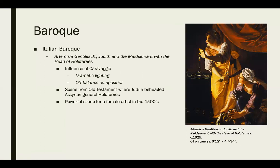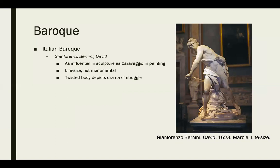We don't see many — if any — female names around this time, but Artemisia Gentileschi is one female artist who emerges. Her piece Judith and the Maidservant with the Head of Holofernes is influenced by Caravaggio, using very dramatic lighting and an off-balance composition. It depicts the Old Testament scene where Judith beheaded the Assyrian general Holofernes — a very powerful scene for a female artist to create in the 1500s.